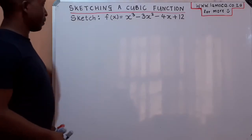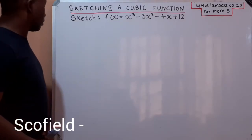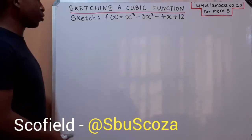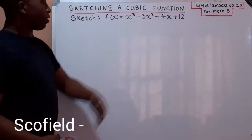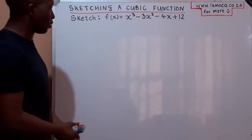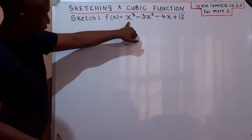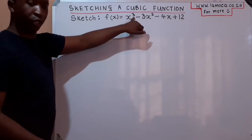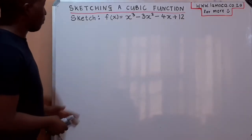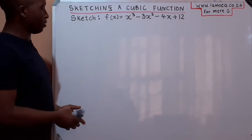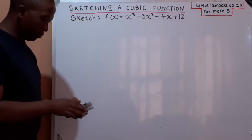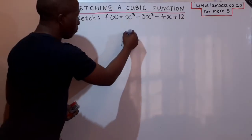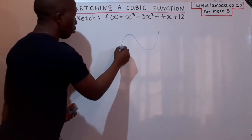Let's take an example that requires us to sketch a cubic function. In this video, we're going to learn how to draw a cubic function. You know this is a cubic function because the highest exponent of x is equal to 3, as you can see in the defining equation. Graphically, it usually looks like this — it might take a form such as this one.